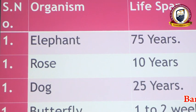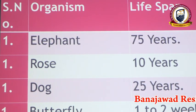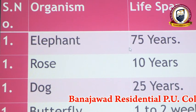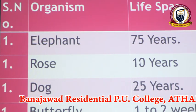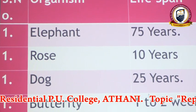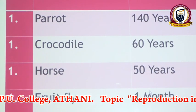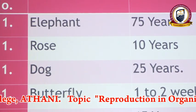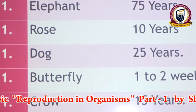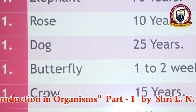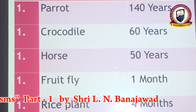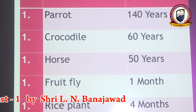If you consider the life span of different organisms: elephant can live for 75 years, rose 10 years, dog 25 years, butterfly just one to two weeks, crow survives for 15 years, banana tree two years, cow 25 years, and parrot 140 years.